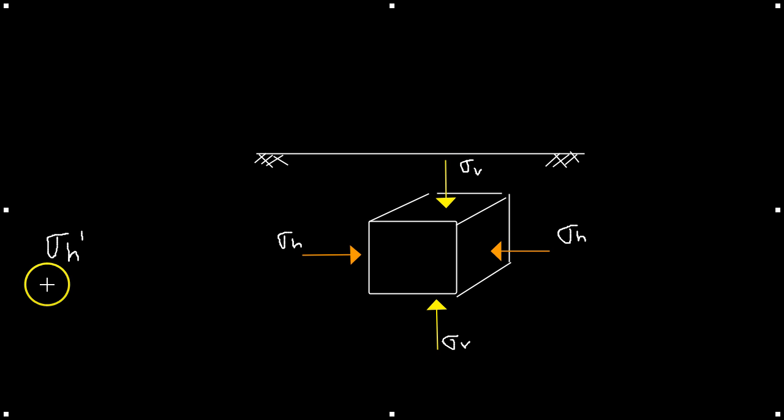Now, the coefficient of lateral earth pressure is defined as the ratio of the horizontal effective stress to the vertical effective stress, which is simply written as k is equal to sigma-h effective divided by sigma-v effective. And that's how we can calculate the coefficient of lateral earth pressure for the ground.